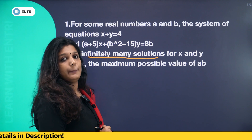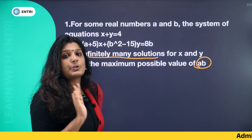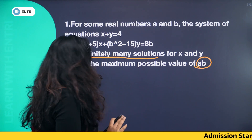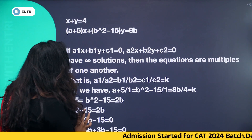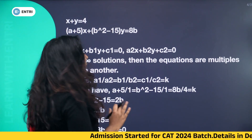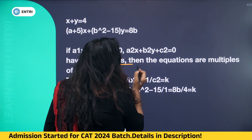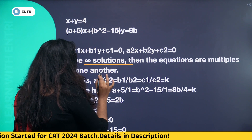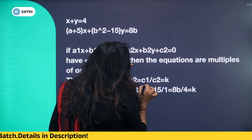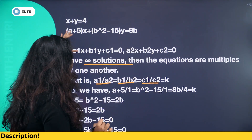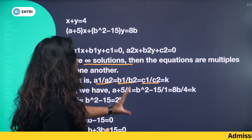The maximum possible value of a plus b — the options are 15, 33, 55, 25. For the rule of infinite solutions, we use the condition: a1/a2 = b1/b2 = c1/c2. We have two equations, and we set a1, b1, c1, c2 equal to a constant k.